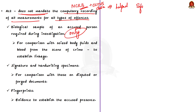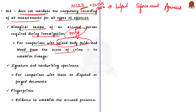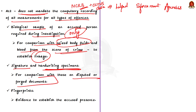CCTNS helps in matching missing persons with found persons and unidentified bodies, matching lost or stolen mobile phones and vehicles, and tracking habitual criminals and interstate gangs. The biological sample of an accused is required during investigation for comparison with seized body fluids and blood from the scene of crime to establish linkage. Signature and handwriting specimens are taken for comparison with disputed or forged documents. Since fingerprints are unique, latent chance finger impressions lifted from the scene of crime are admitted as clinching evidence in a court of law to establish the presence of the accused.